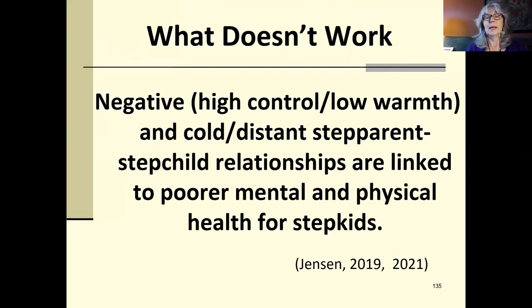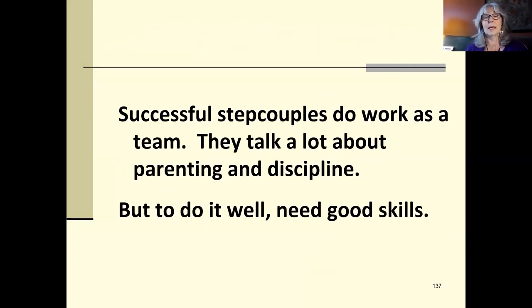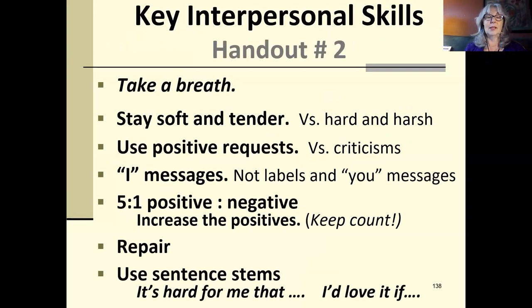Lower well-being is linked to that authoritarian, negative, harsh parenting we just talked about. And cold, distant step-parent, step-child relationships are also linked to poorer mental and physical health. Except the finding is that cold, distant, absent step-parents, step-child relationships are often in a family where there is more distance between the couple and between the parent and child as well. So on this skills level, successful step-couples, again, do need to work as a team. They talk a lot about parenting and discipline. But to do it well, given that pull to the polarization polka, they need good skills. Same set. It's in handout two.